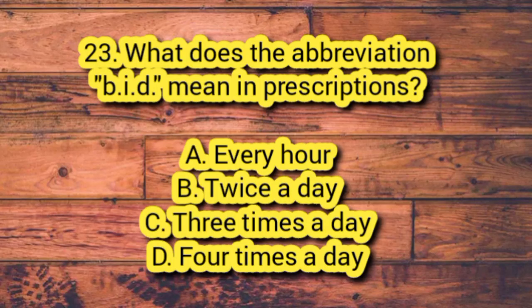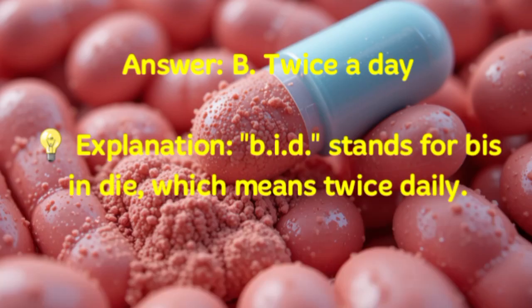Number 23. What does the abbreviation B.I.D. mean in prescriptions? A. Every hour. B. Twice a day. C. Three times a day. D. Four times a day. Answer: B. Twice a day. Explanation: B.I.D. stands for bis in die, which means twice daily.